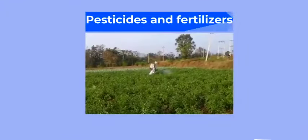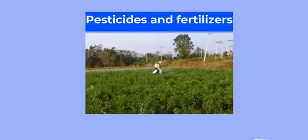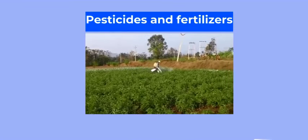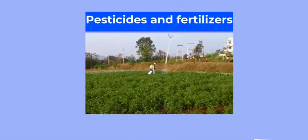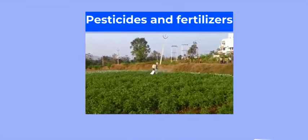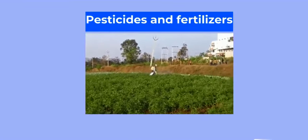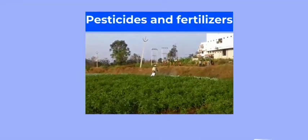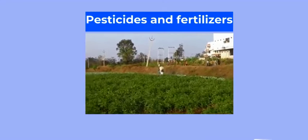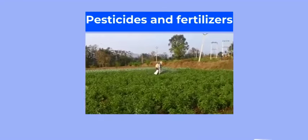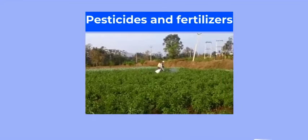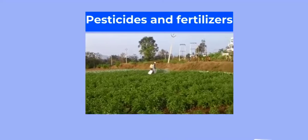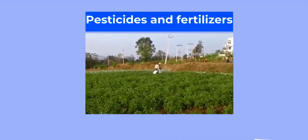Even though farming is very important, it can be a cause of land pollution. When people farm, they use chemicals to keep their plants safe. These chemicals are called pesticides or fertilizers. They are released into the ground and they can end up in our water sources.